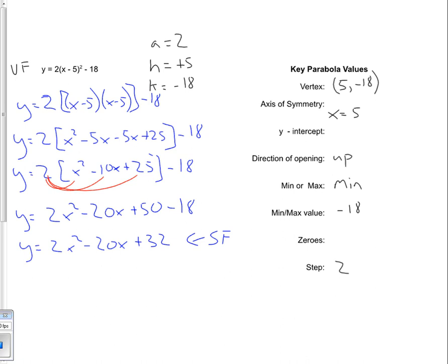And from standard form of the equation, we can always figure out what the y-intercept is. So our y-intercept is that positive 32. Standard form lets us know that the y-intercept is going to be positive 32.